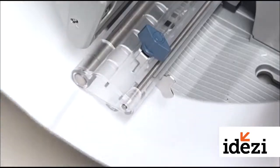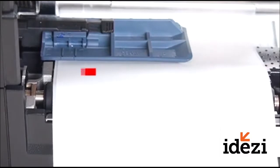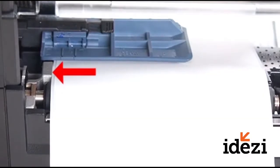Take the fan fold media over the media hub and thread the stock under the clear media guide and the gray media sensor.